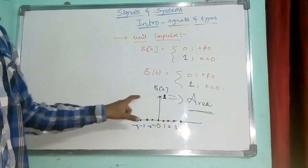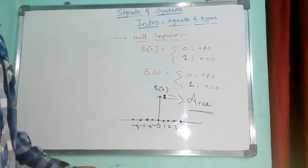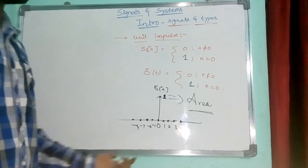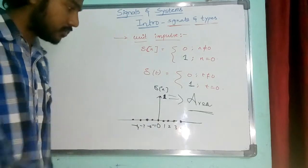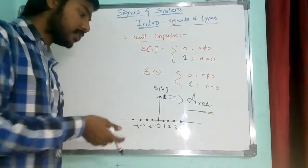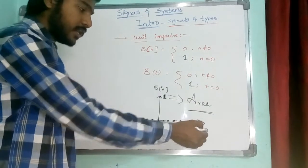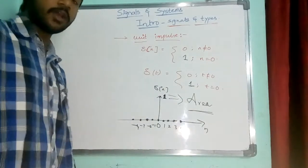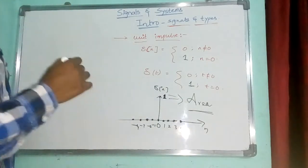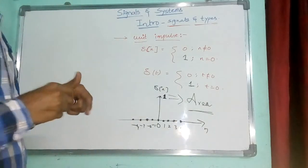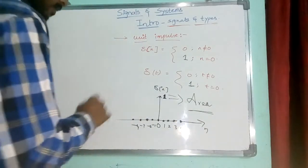So this area of 1 is what is given by the impulse — that is δ(n). Similarly, for continuous time, the same thing applies, just with a continuous axis instead of a discrete axis. This is the unit impulse.